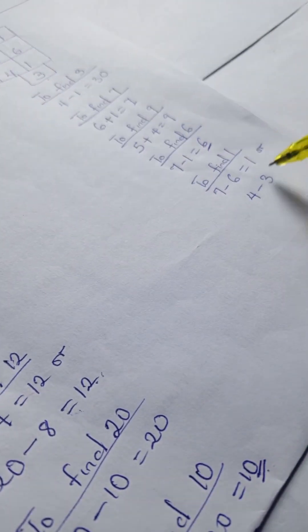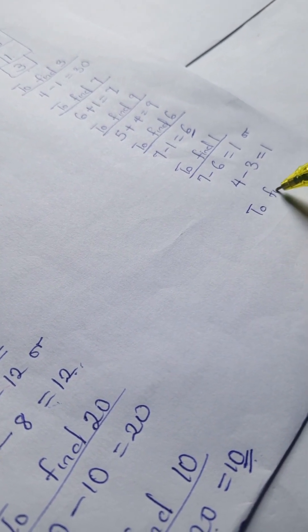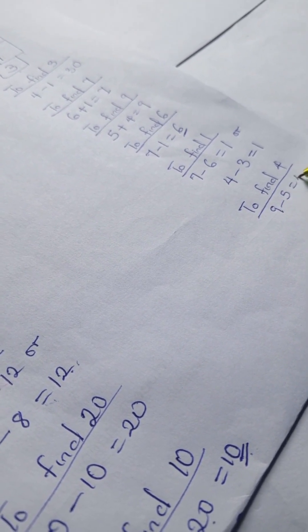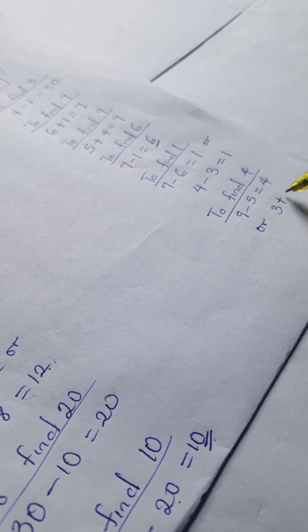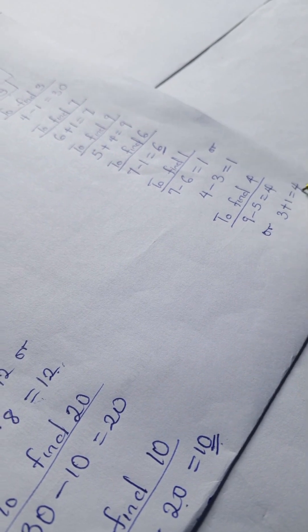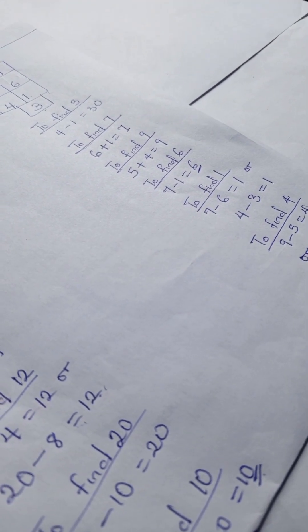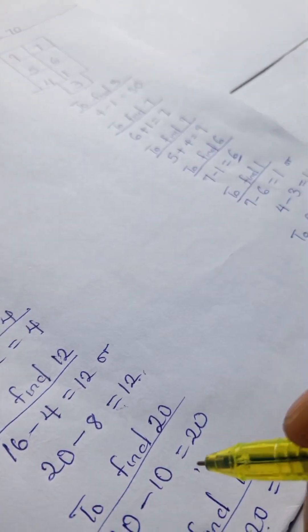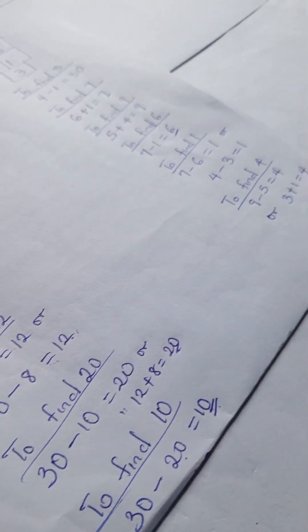So 4 minus 3 equals 1. To find 4, we have 9 minus 5 equals 4, or 3 plus 1 equals 4. We can also have 12 plus 8 equals 20.